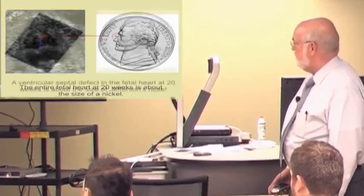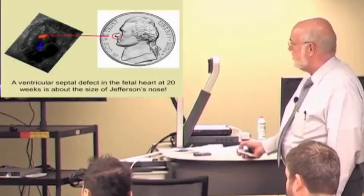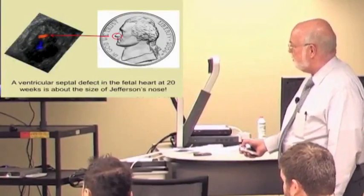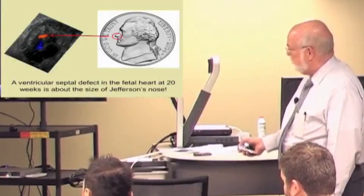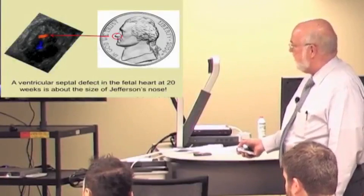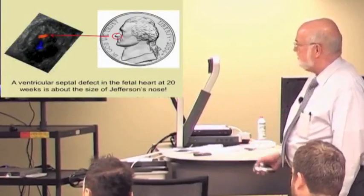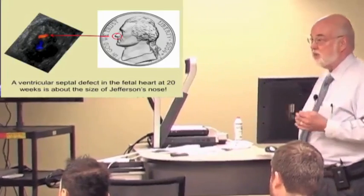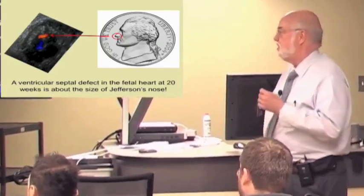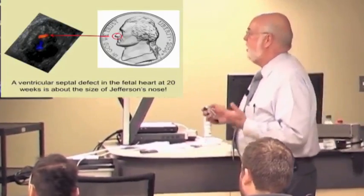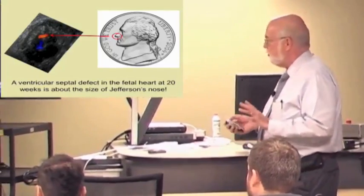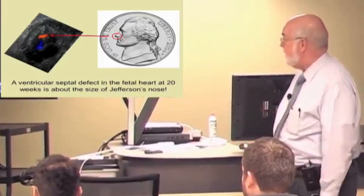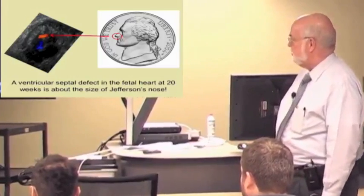Well, not only that, but we're able to see in this case a ventricular septal defect on color Doppler where we're showing where flow goes. Flow crosses the septum, and that little defect is about the size of Jefferson's nose. So our resolution now is submillimeter in most cases. And when we talk about frequency and that kind of stuff, we'll talk about how we get to this level of resolution and what you have to do to maximize that on the equipment.